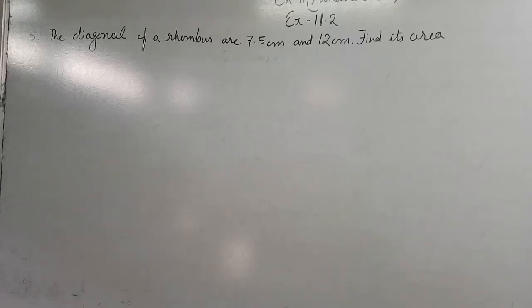Now students, in question number 5 they are telling the diagonals of rhombus are 7.5 cm and 12 cm. Find its area.